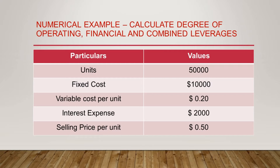We are producing 50,000 products. To acquire assets, pay salaries, pay rent — whatever cost is incurred in our business — is $10,000 fixed cost. The variable cost depends on the production level: $0.20 per unit of production. The interest expense of $2,000 means we have borrowed some funds to invest in and run our business, and this interest is obligatory in nature. We are selling our product at a price of $0.50 per unit.